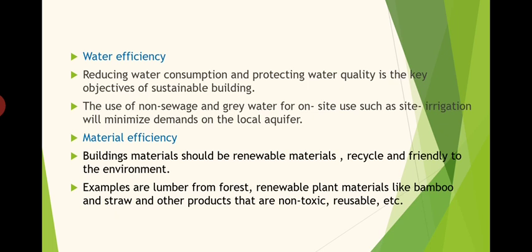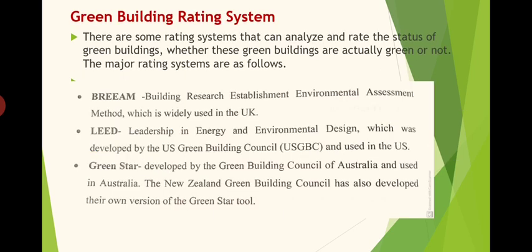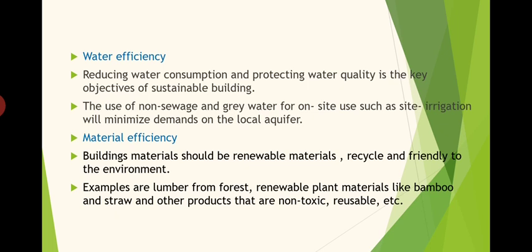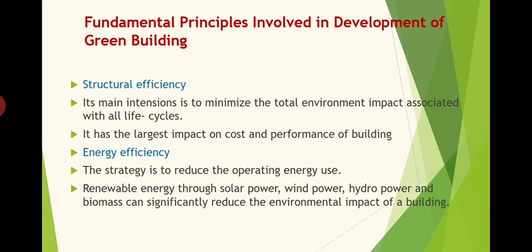The last fundamental principle is material efficiency. Whatever material we use should be eco-friendly. Building materials should be renewable, recycled, and friendly to the environment. Examples are lumber from renewable forests, plant materials like bamboo and straw, and other products that are non-toxic and reusable. If even after demolishing we can reuse the same material or use it in a modified form again and again, such types of materials demonstrate material efficiency.